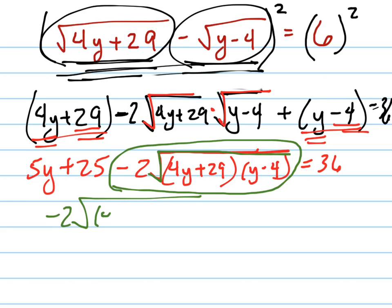So it equals 4y plus 29, y minus 4 equals 30. Let me just do this. Negative 5y. And when I subtract 25 from 36, I get positive 11.